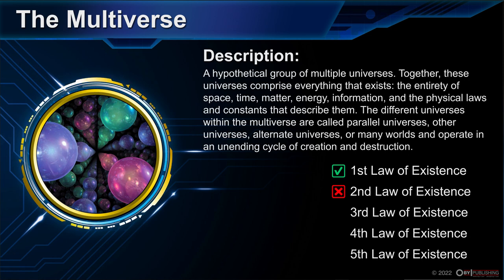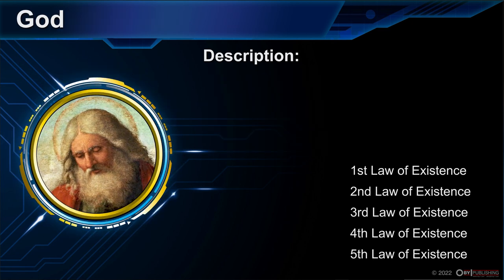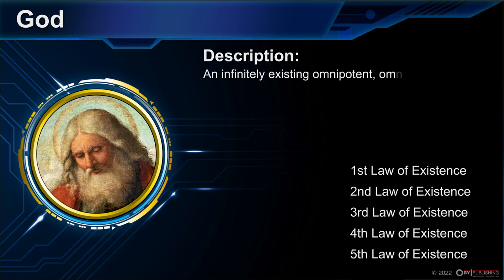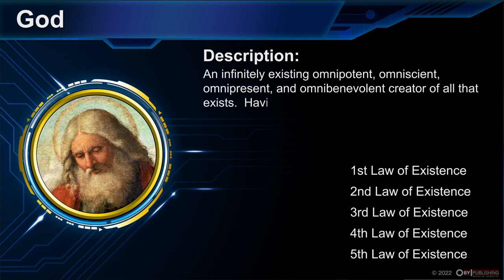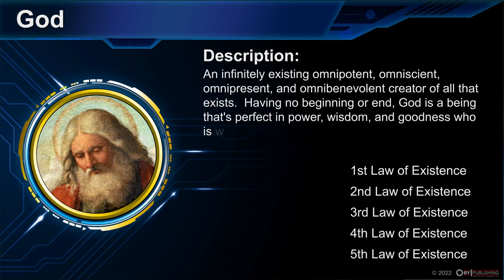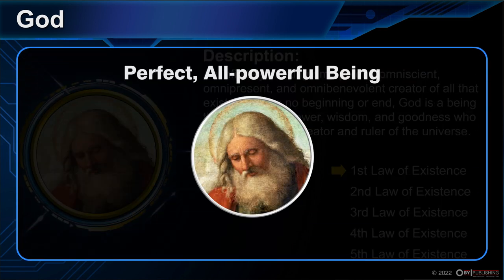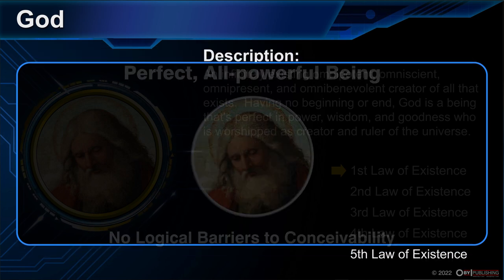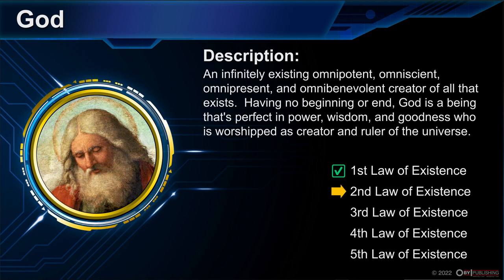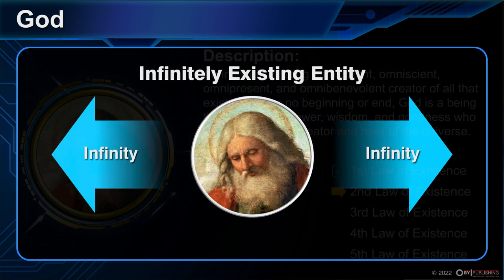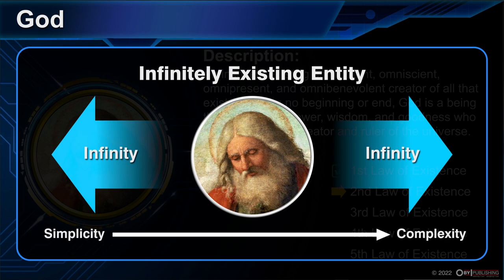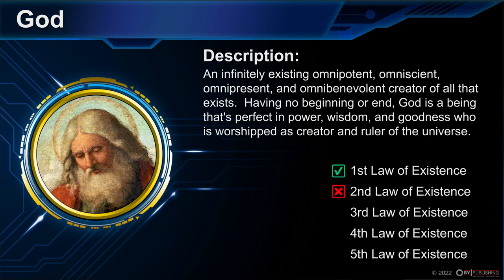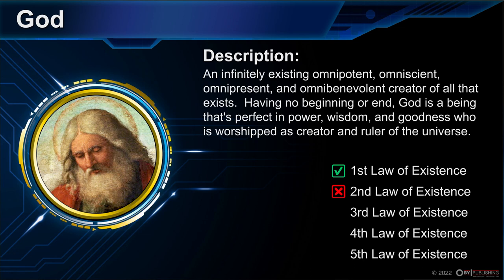Now let's see how God does when facing the five laws of existence. God is defined as an infinitely existing, omnipotent, omniscient, omnipresent, and omnibenevolent creator of all that exists — having no beginning or end, perfect in power, wisdom, and goodness, worshipped as creator and ruler of the universe. A perfect, all-powerful being is readily conceivable, with no logical barriers, so God easily survives the first law. However, we run into resistance with the second law. An infinitely existing entity with no beginning or end cannot be brought into existence by way of an evolutionary progression of consciousness moving from simplicity to complexity. Something that has always existed cannot emerge or evolve from a simpler state. Just like with science's multiverse, theism's omnipotent God gets shut down by the second law of existence. Anything defined as infinitely existing doesn't fare well when facing the five laws of existence.